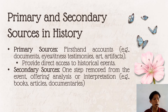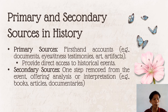Primary sources — which can be written or non-written such as sound, artifacts, and artwork — provide direct or firsthand evidence about an event, object, person, or work of art. They include historical and legal documents, eyewitness accounts, data, creative writing, audio and video recordings, speeches, art objects, photographs, films, journals, letters, diaries, scrapbooks, published books, newspaper and magazine clippings published at the time of the event, interviews, clinical reports, treaties, and government publications.